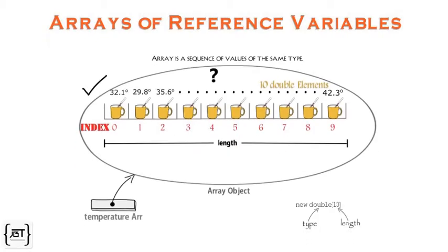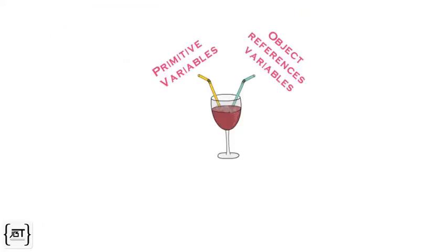In the last video, we saw an example of an array that holds primitive variables. We learnt that the array is itself an object that is accessed using a reference variable. Arrays can also hold reference variables.